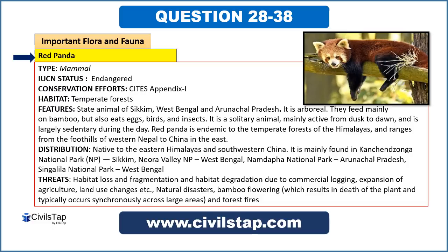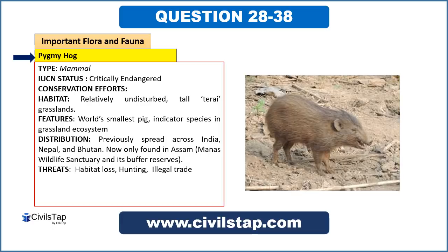The pygmy hog is a critically endangered species also included in CITES Appendix 1. Its habitat is mainly grasslands. It is the world's smallest pig and an indicator species of the grassland ecosystem, meaning its presence and numbers indicate the health of the grassland. Since their number is critically endangered, their conservation is very important.